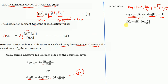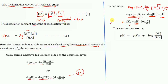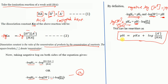Rearranging, when the −log([A⁻]/[HA]) term moves to the other side it becomes +log([A⁻]/[HA]). So the equation becomes: pH = pKa + log([A⁻]/[HA]). This is the Henderson-Hasselbalch equation for a weak acid, where [A⁻] is the concentration of the conjugate base and [HA] is the concentration of the weak acid.